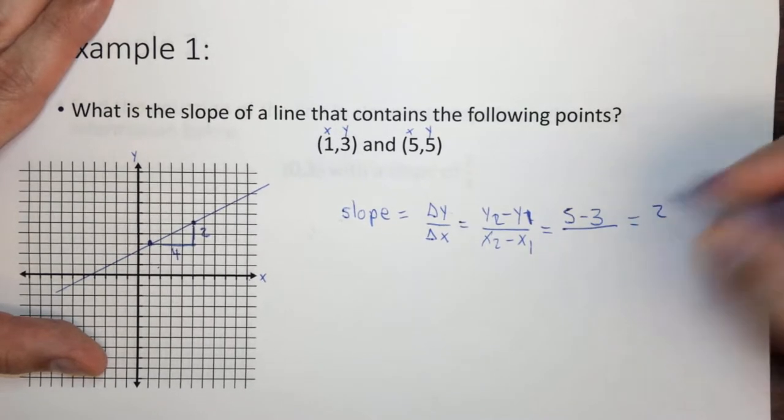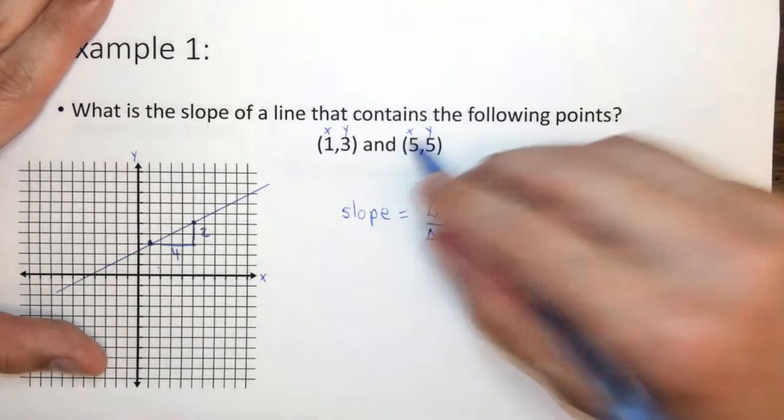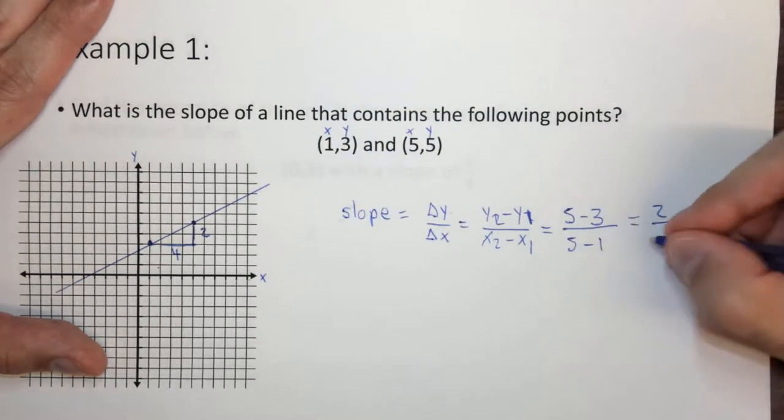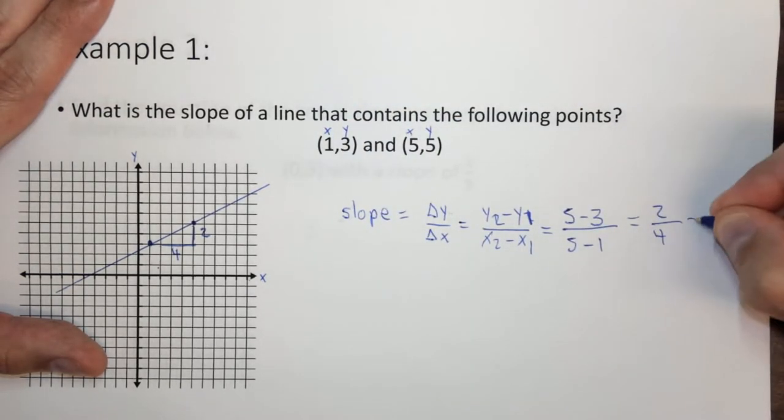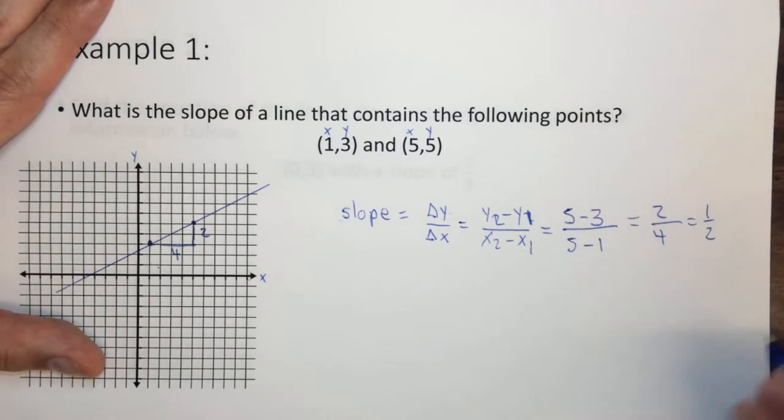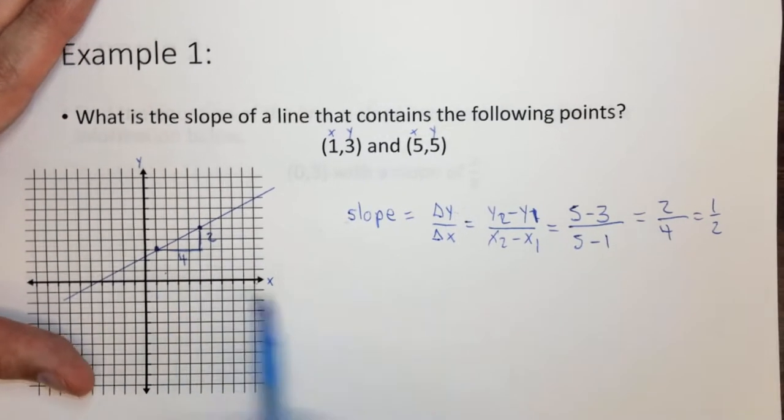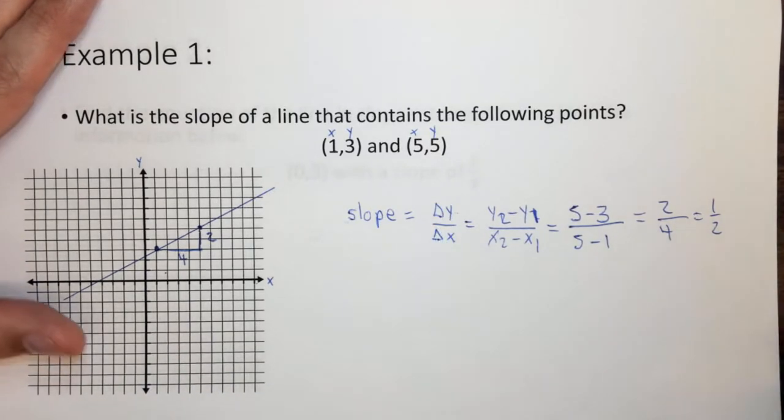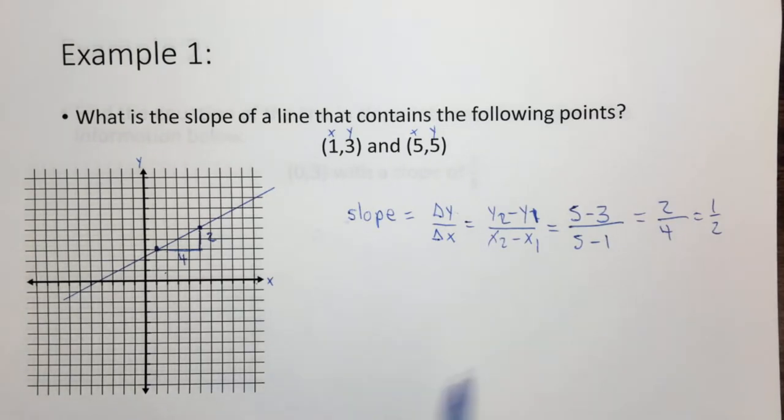And on the bottom, we're going to have x2, which is five, minus x1, which is one, which equals four. If we simplify, we get a half. So you'll notice whether we do it by drawing the line, or we do it by changing y over changing x, we still get the same value for the slope, because you're essentially doing the same thing, you're just doing it different ways.